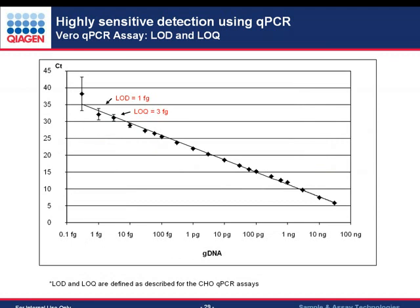Besides the CHO assay, we also developed an assay for VERO genomic DNA and determined its LOD and LOQ. For VERO, the limit of detection is 1 femtogram, similar to CHO. However, the limit of quantitation is even more sensitive, at 3 femtograms for the VERO assay.